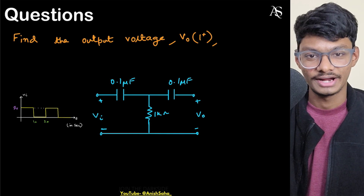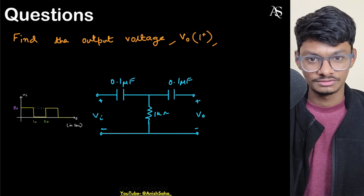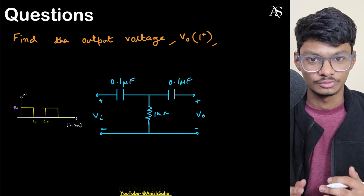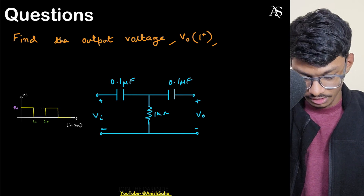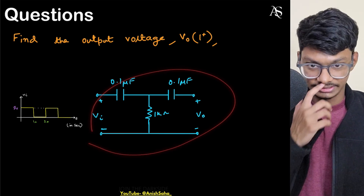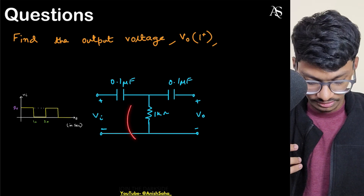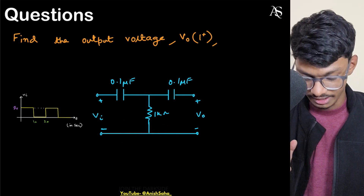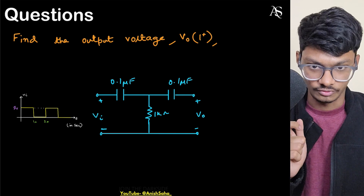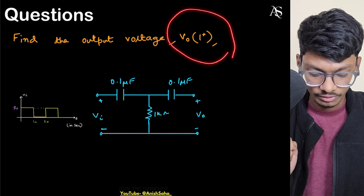Hey everyone, welcome back to my YouTube channel. Today we will solve a simple yet interesting question. We have been given an RC circuit with two capacitors and a single resistor, along with a square wave input waveform. We have to find the output voltage.